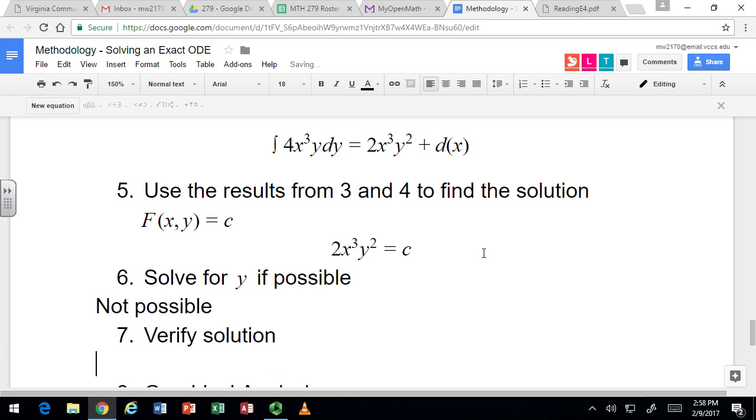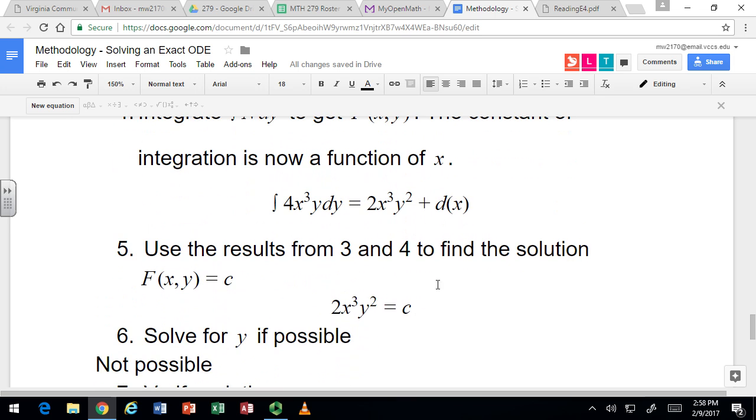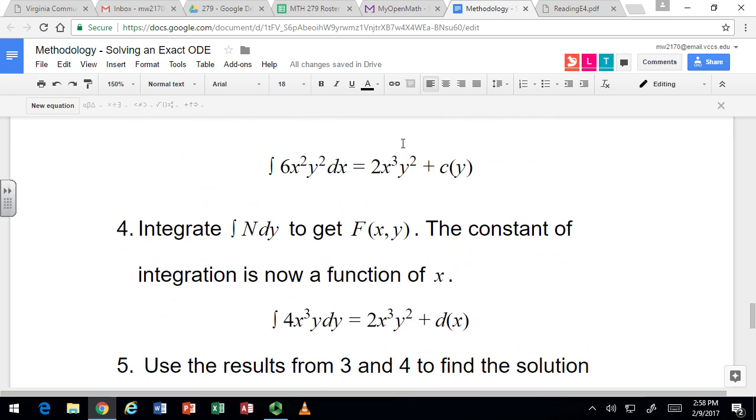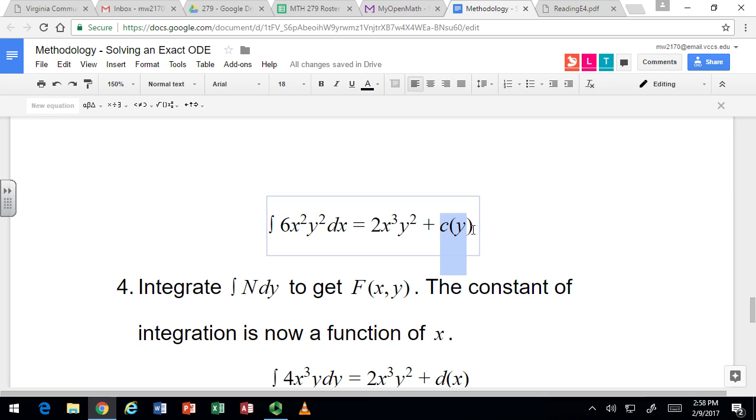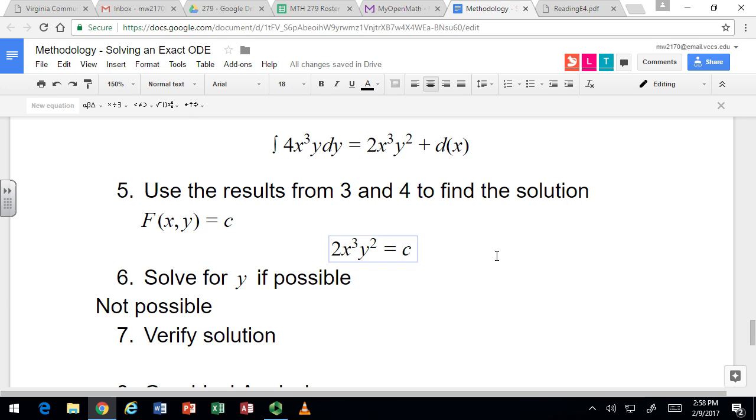Maybe verifying the solution would try to make more sense of this. So c is essentially the functional value that we're looking at pretty much. Well, c is a function, yes. C is a constant. At the end it's a constant. When we first do that integration it's a function. So here it's a function of y. But I guess can we look at the solution as c being the functional value of 2x cubed y squared? Yeah.